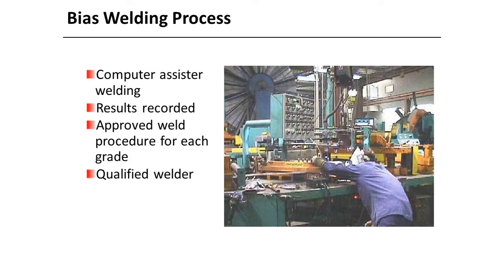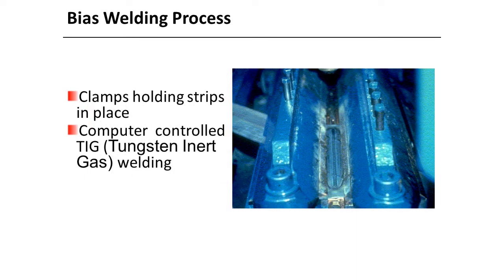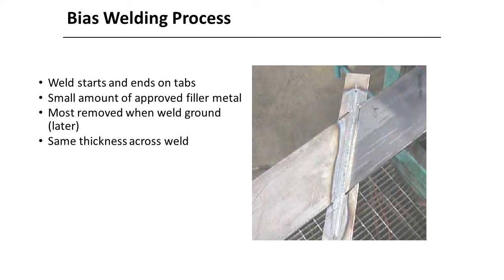Each grade and yield strength of strip material requires a specialized weld procedure. Ninety percent of weld defects occur at the beginning or ending of the weld where the arc stops and starts; runoff tabs are the same material as the tube. Tungsten inert gas welding with argon shielding gas is used with a filler metal to form the weld. The weld starts and ends on tabs, and most of the filler metal is removed when the weld is ground, resulting in the same thickness across the weld.